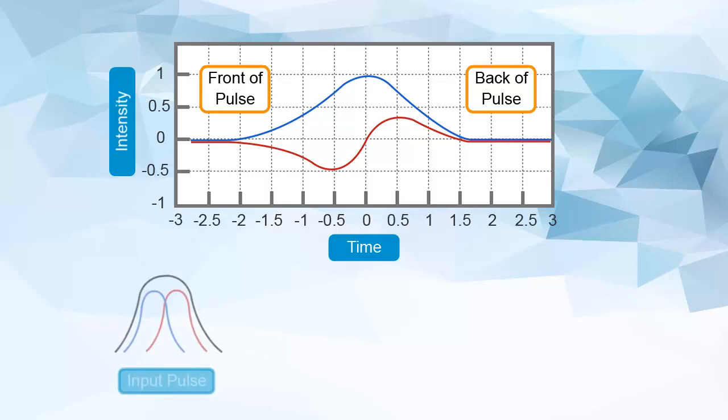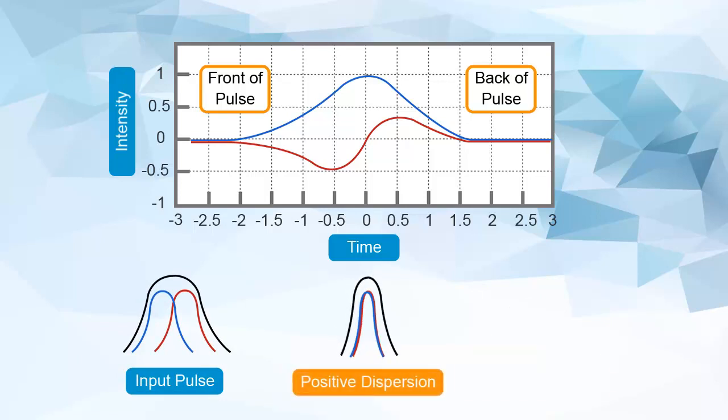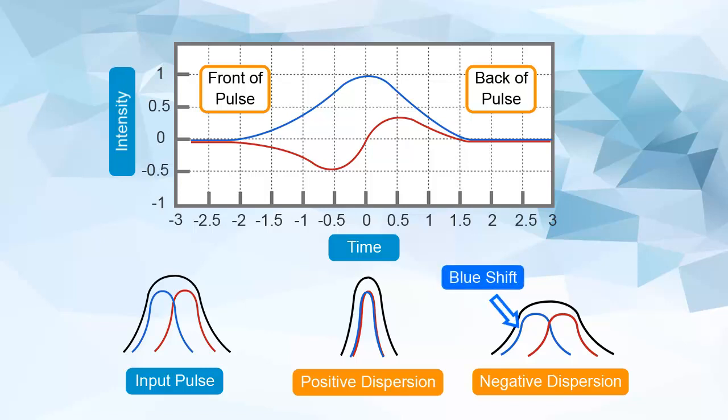The time-varying refractive index modulates the phase of the transmitted wavelengths, broadening the wavelength spectrum of the transmitted optical pulse. The result is a shift toward shorter wavelengths at the trailing edge of the signal, blue shift, as well as a shift toward longer wavelengths at the leading edge of the signal, red shift.